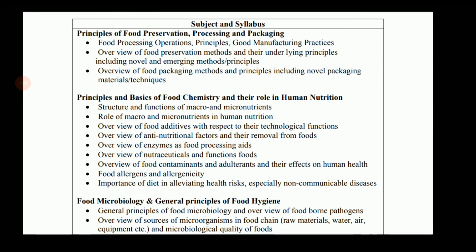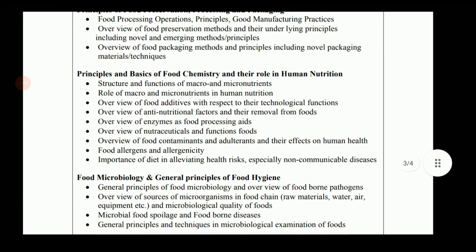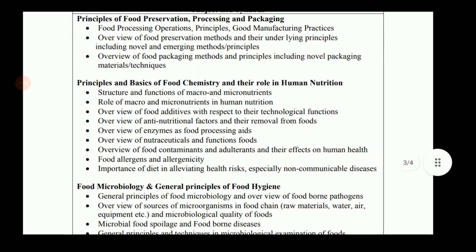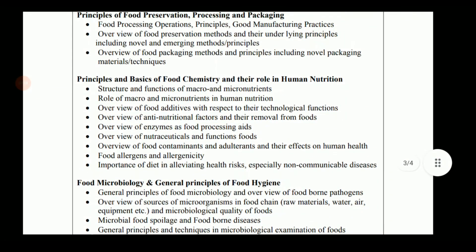Broadly three topics are covered in the syllabus. First is Principles of Food Preservation, Processing and Packaging with sub-topics listed. Second is Food Chemistry and Nutrition. Third is Food Microbiology and General Principles of Food Hygiene. These are the major and important domains of food technology covered. There is no FSSAI and nothing on food regulatory bodies — the syllabus is reduced but in concentrated form.